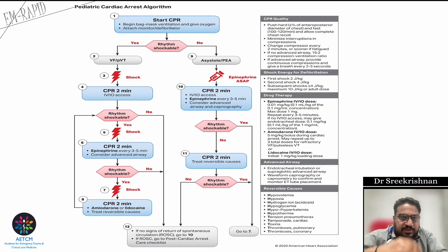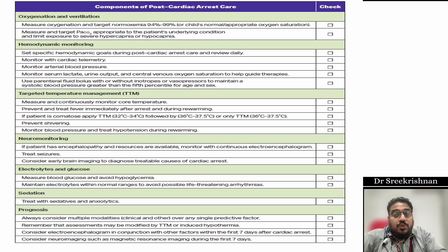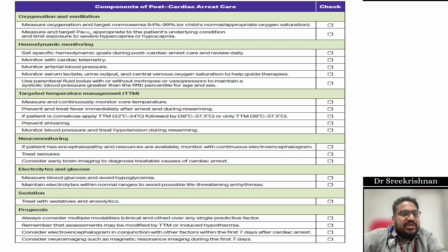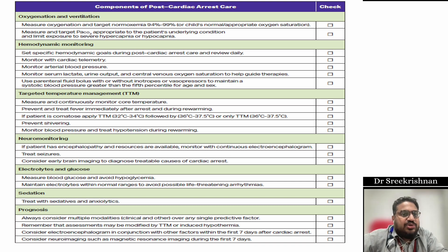When return of spontaneous circulation is achieved, proceed to post-cardiac arrest care. For oxygenation and ventilation: target normoxemia of 94 to 99% saturation — not 100%. Target normocapnia — a normal PaCO2 appropriate to the patient's condition, avoiding both severe hypercapnia and hypocapnia.